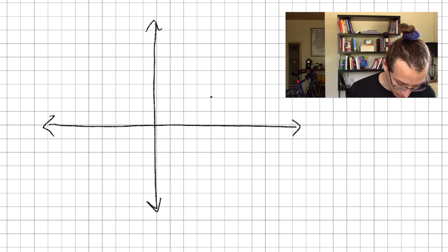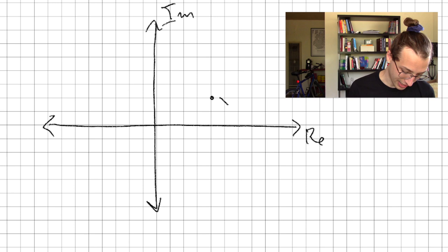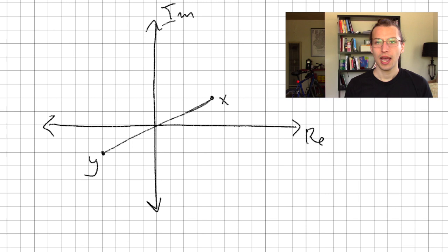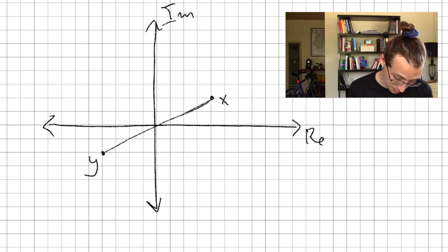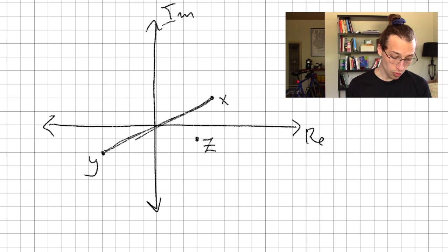Now, the distance from x to y is just the length of this line right here. And now, let's pick some point, any other point in our space to be z. Maybe we'll pick z to be right here. All the triangle inequality states is that this distance here from x to y must be equal to or less than the distance from x to z plus the distance from z to y.